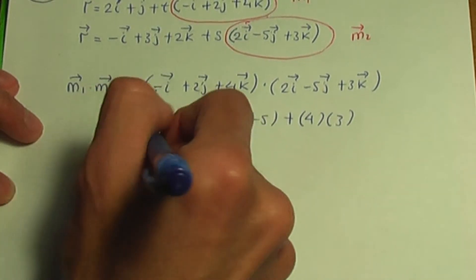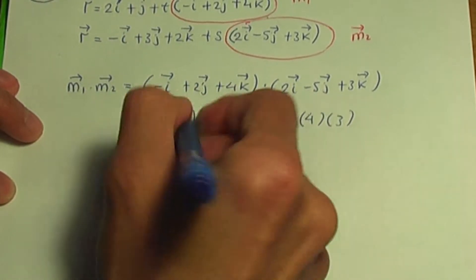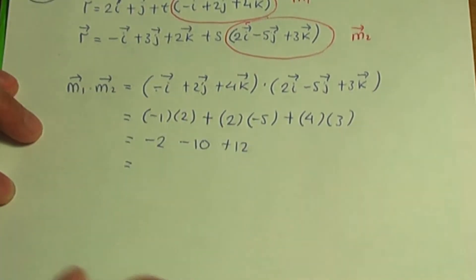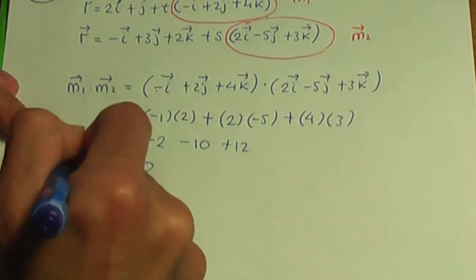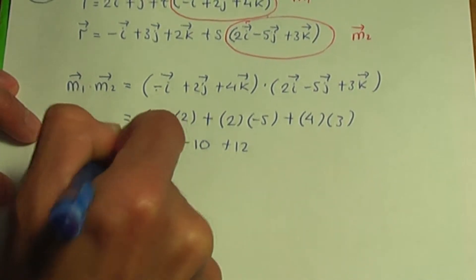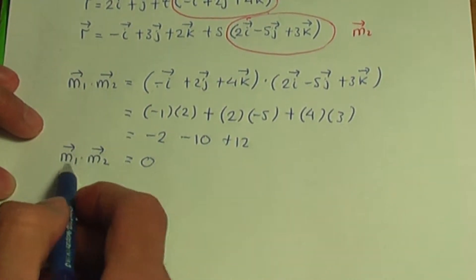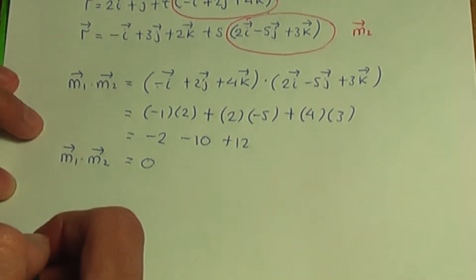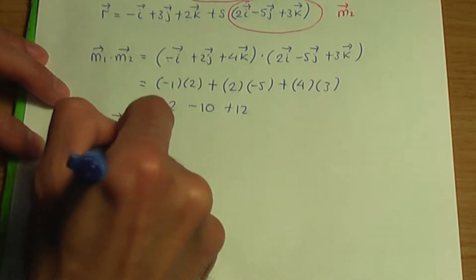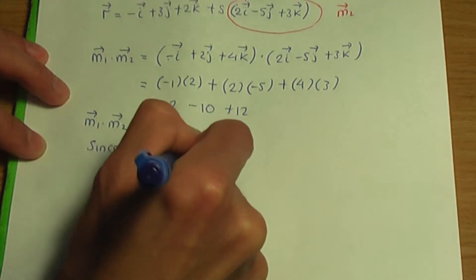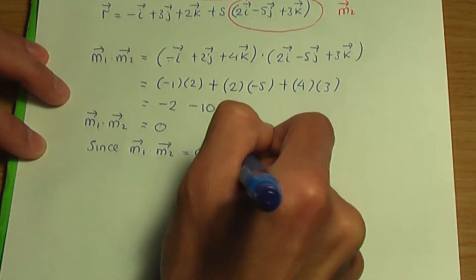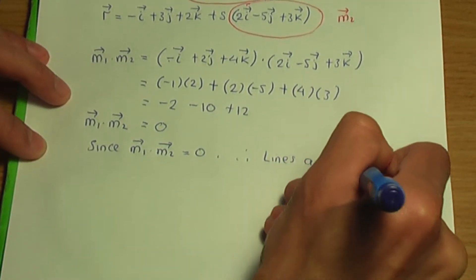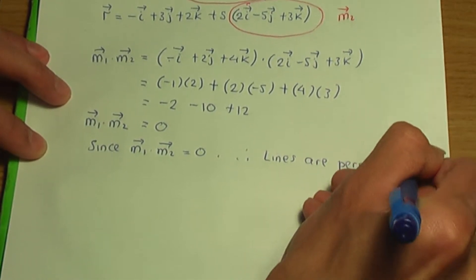Continuing: (-1)(2) = -2; (2)(-5) = -10; (4)(3) = 12. Summing these gives 0. So m1 · m2 = 0. Since the dot product of the direction vectors equals 0, therefore the lines are perpendicular to each other. That completes part A.